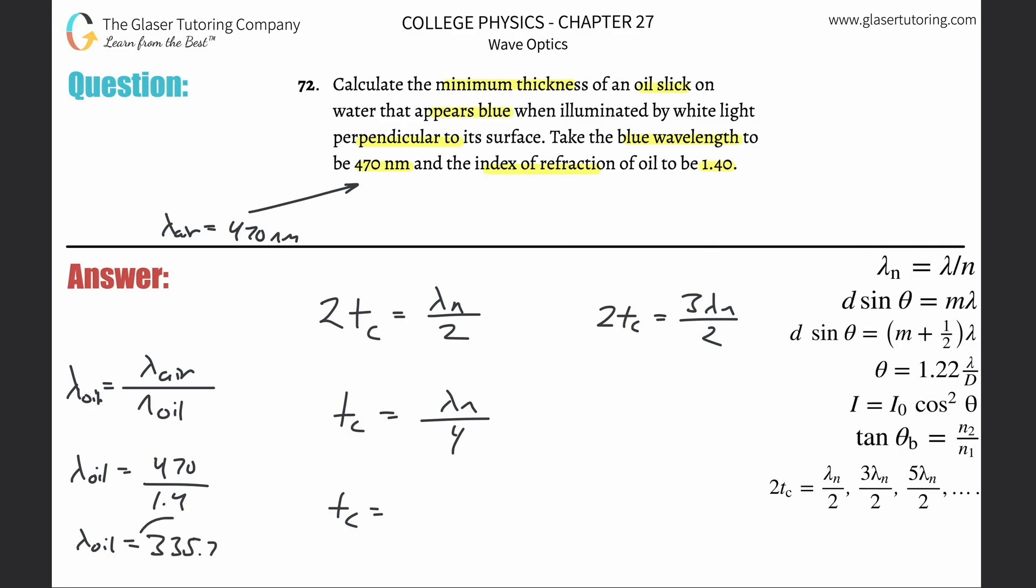And that's the value we need to plug in. So now we do 335.7 all now over 4, and this will give us the minimum thickness of the film. So take that value, divide it by 4, and this would be now 83.9. Now careful with your units. If this is nanometers and this was just a number, then the unit here is nanometers. That's fine. Convert that into meters if you like. It all depends on what you need.